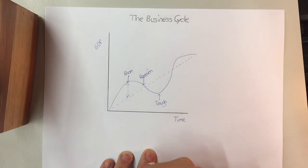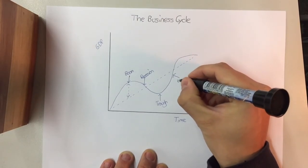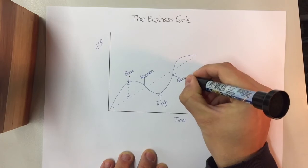But after a while, innovation kicks in, people come up with new ideas, people invest in some new projects and business starts to pick up again, people start to invest again. And this is called an expansion or an upswing.